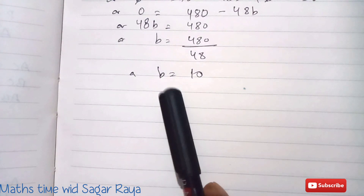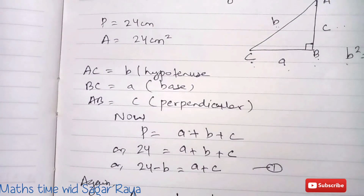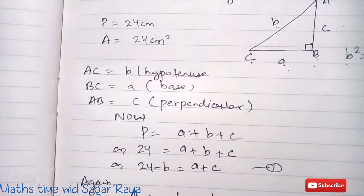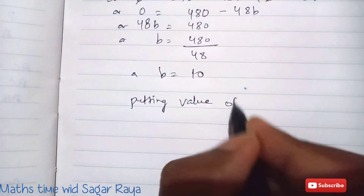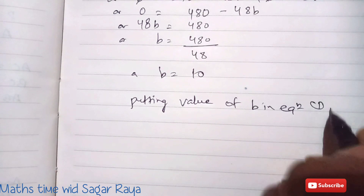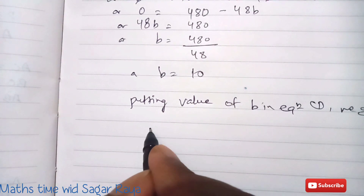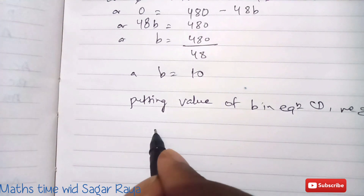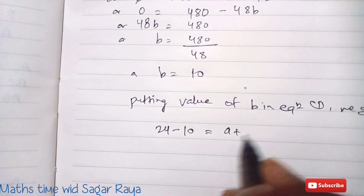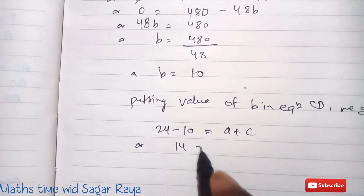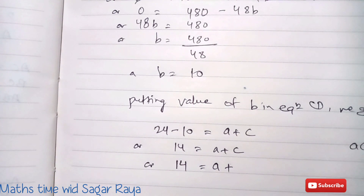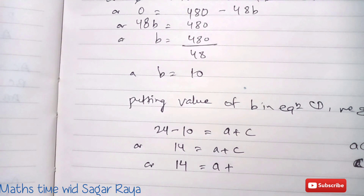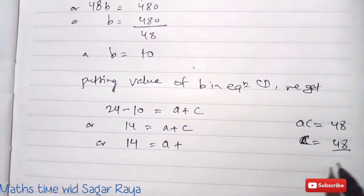Now we substitute the value of b into equation 1. Equation 1 is: a + c = 24 − b. Putting b = 10: a + c = 24 − 10 = 14. From equation 2, ac = 48, so c = 48/a.